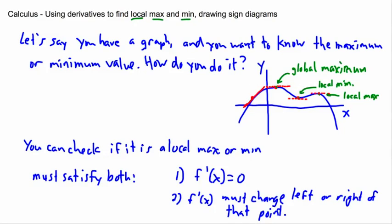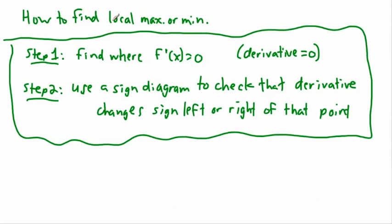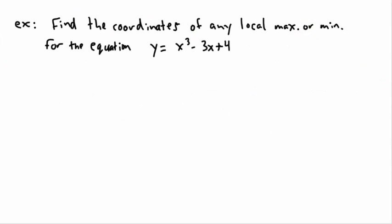The key feature was the steps. How do we find it? We find where the derivative is equal to zero, and then we have to use a sign diagram to check that the derivative changes sign when you go left or right of that point. So let's do an example — I think that'll really help. Find the coordinates of any local max or minimum.